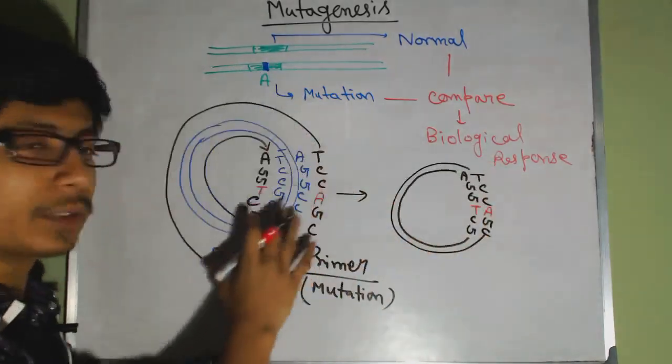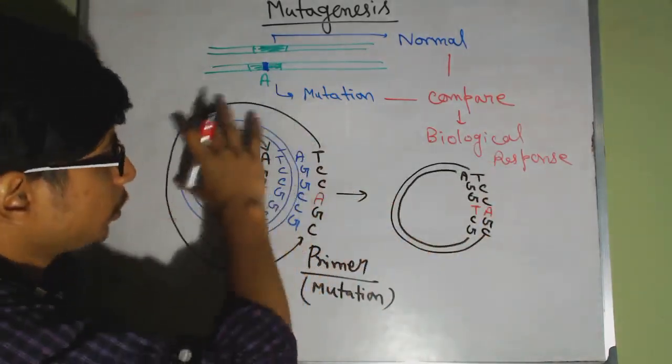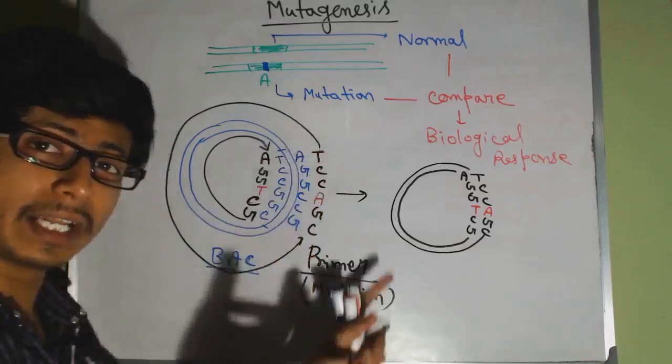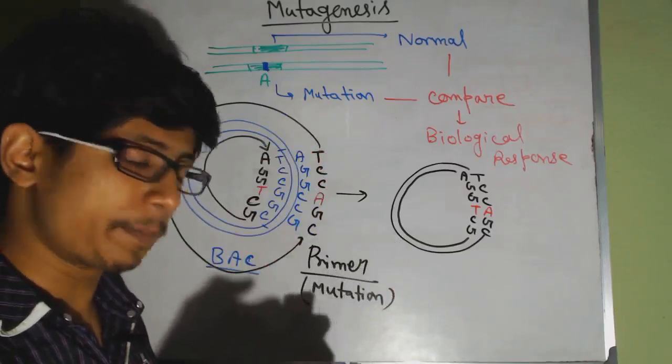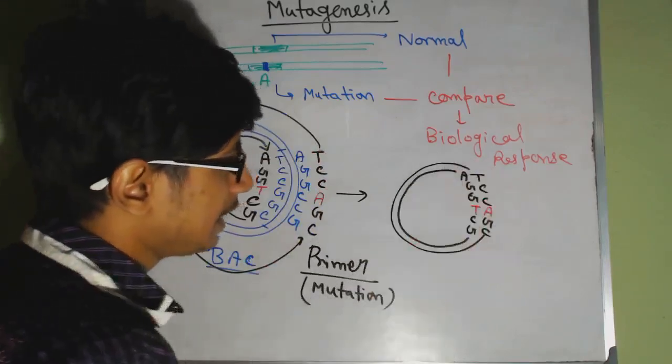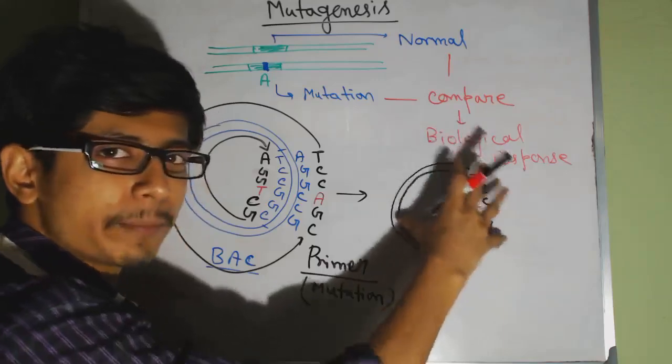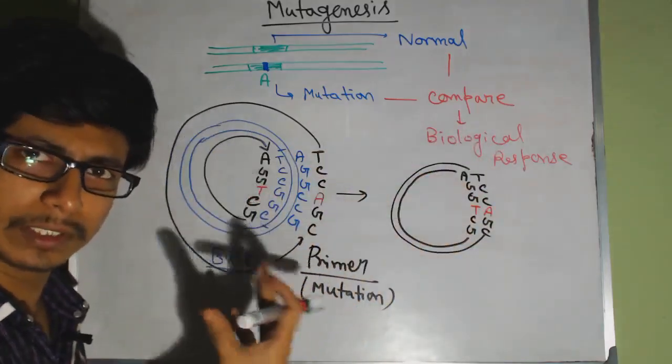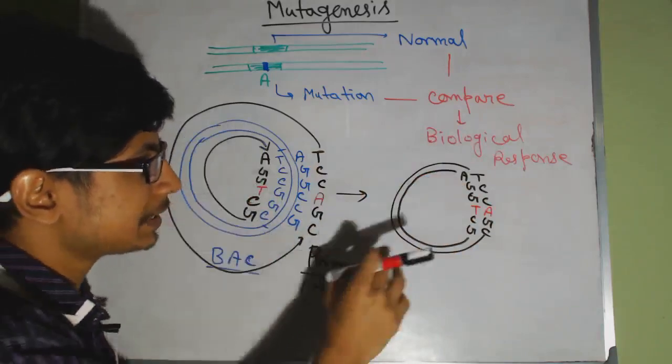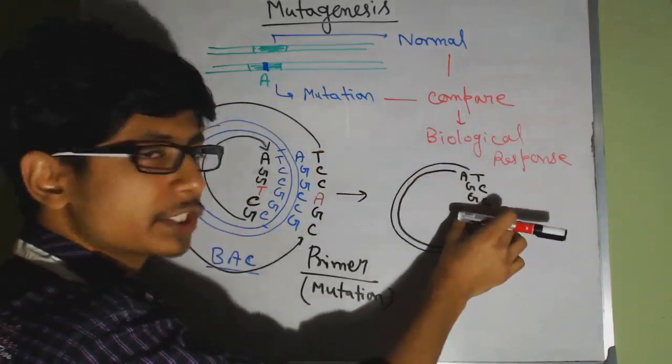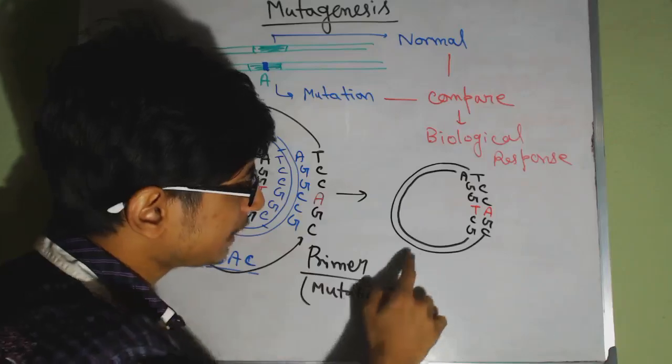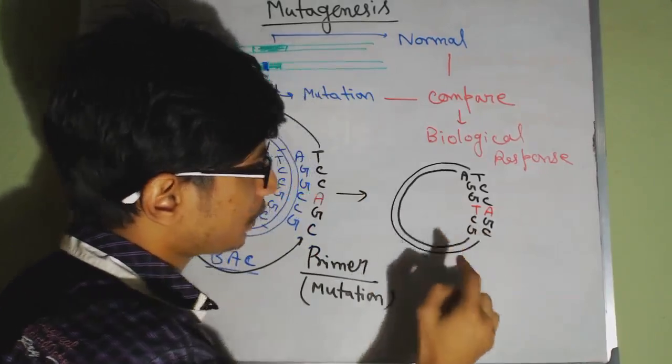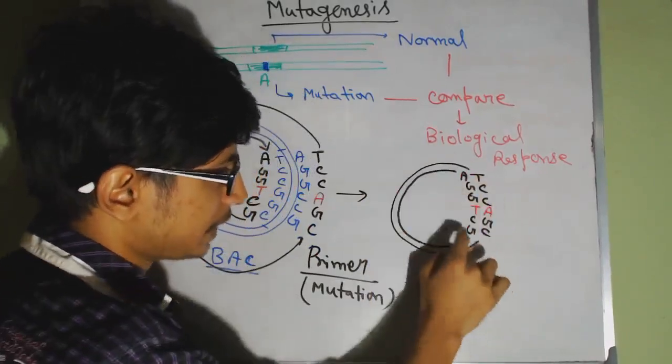Normally, this blue thing is the vector that we take normally. This is the primer, we extend the primer using the replication synthesis machinery, and then we get this. Now this is the entire replica of that vector or of the chromosome, whatever we say, but this is containing a mutation. And here, after this whole synthesis is done, there will be a nick, there won't be a proper joining, there will be a nick present.